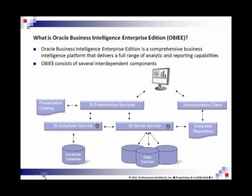The second component of Oracle Business Intelligence is the BI presentation service. The BI presentation service is a web engine that wraps data it receives from the BI server service in XML and HTML and then sends it to your internet browser for viewing. The BI presentation service works with an XML repository called the presentation catalog, which contains information about reports and dashboards.